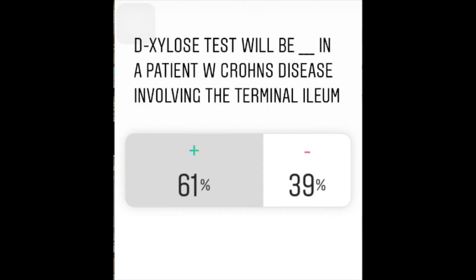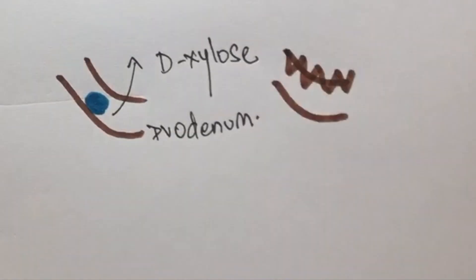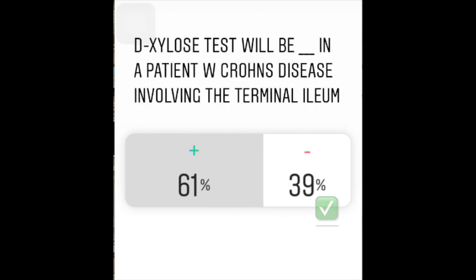The D-Xylose test will be normal in a patient with Crohn's disease involving the terminal ileum. D-Xylose is a substance which is absorbed by the duodenum without the requirement of any enzymes. When there are issues with the duodenum, D-Xylose absorption will be low and the test is considered positive. In Crohn's disease involving the terminal ileum, D-Xylose absorption will not be affected, because D-Xylose absorption takes place in the duodenum and not in the ileum.